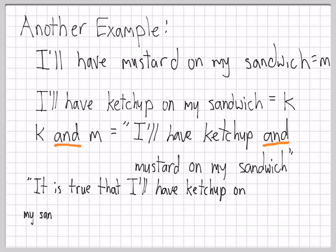Another way to write this is it is true that I'll have ketchup on my sandwich and I'll have mustard on my sandwich. The first phrase it is true that indicates that everything follows is true and again they're separated by the word and. Notice how much shorter the logical version is k and m.